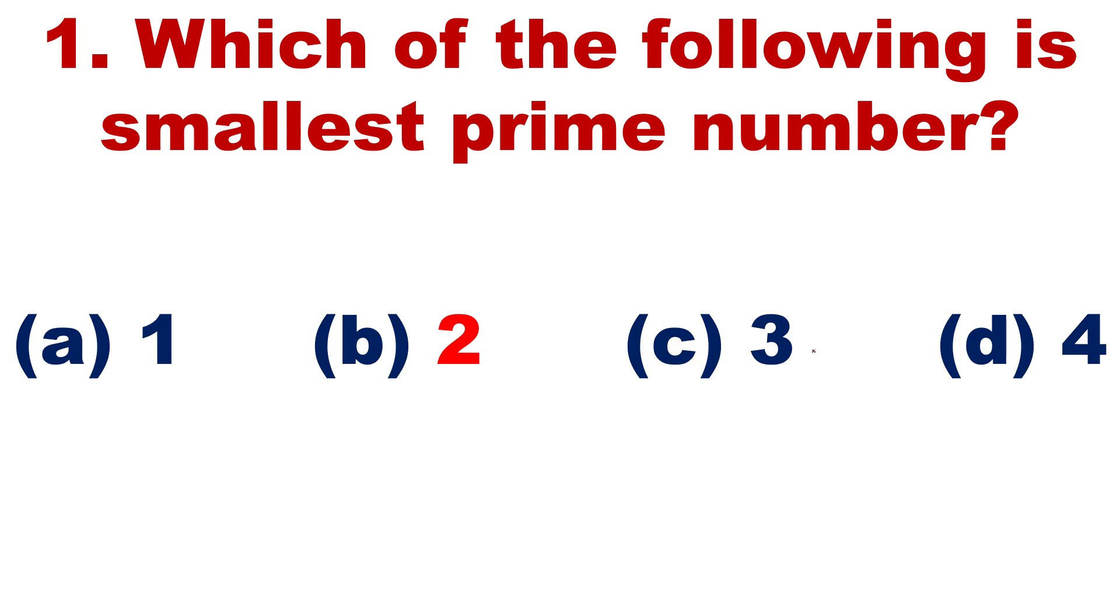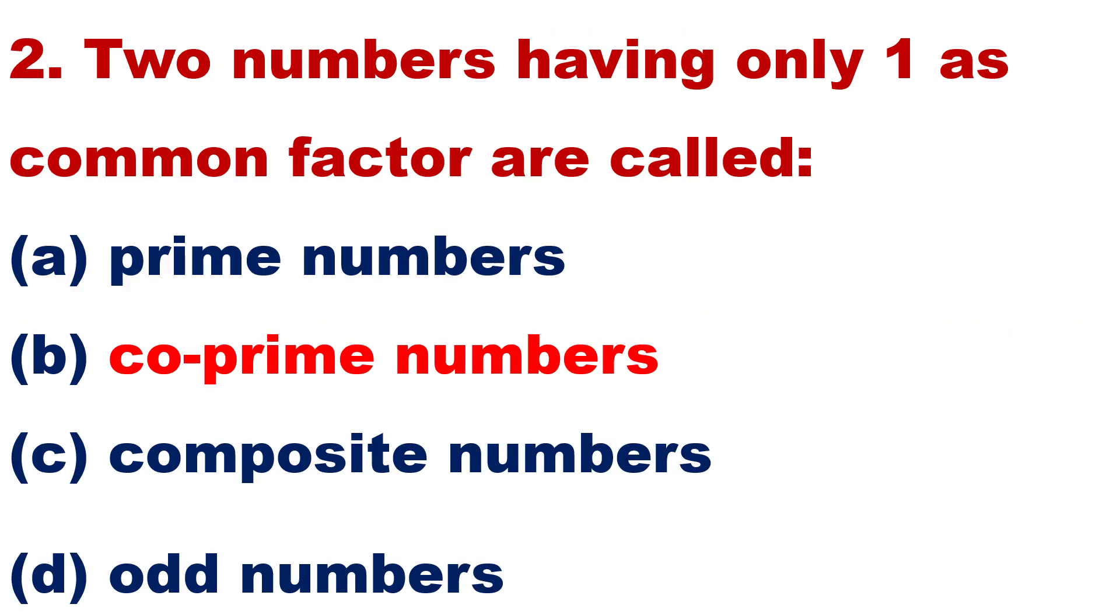Question number 2. This is your question number 2: Two numbers having only one as common factor are called Prime numbers, co-prime numbers, composite numbers, odd numbers. I think you got your answer. I will not tell your answer.